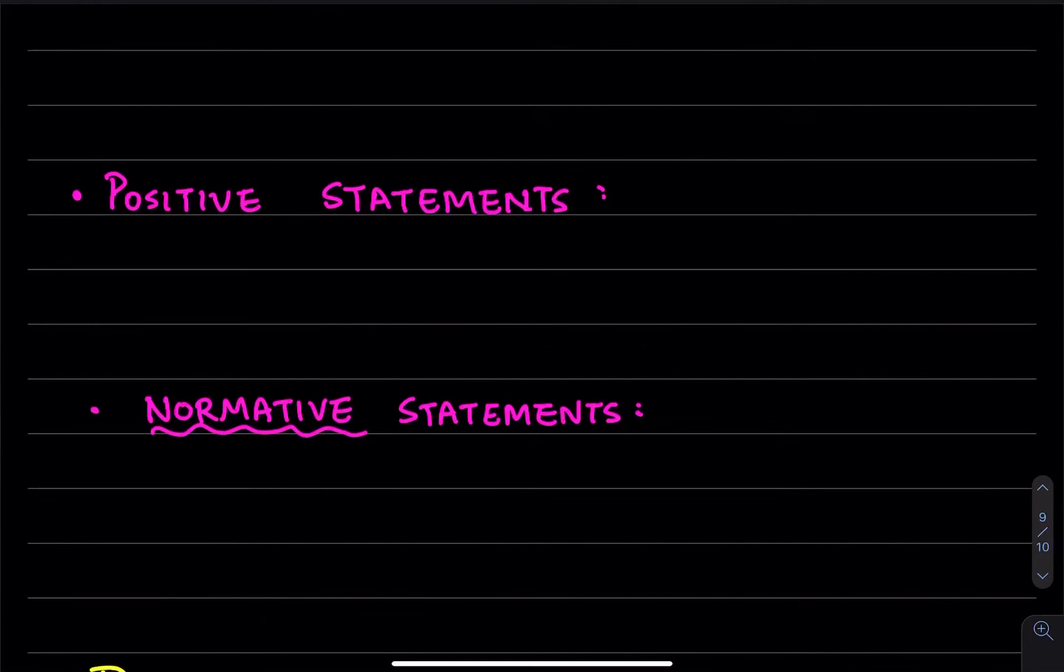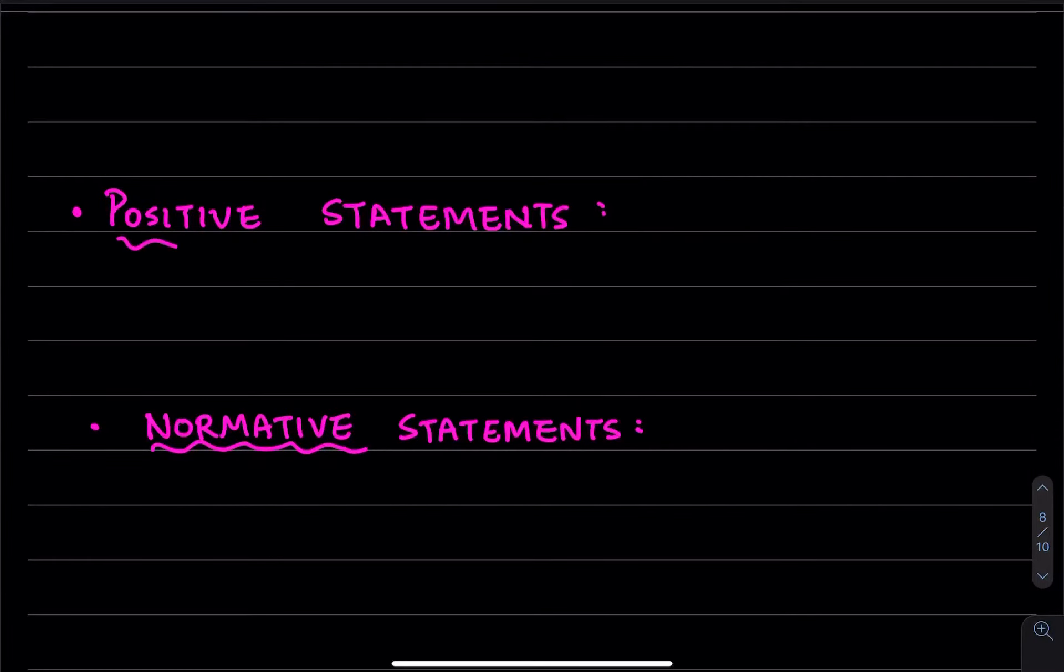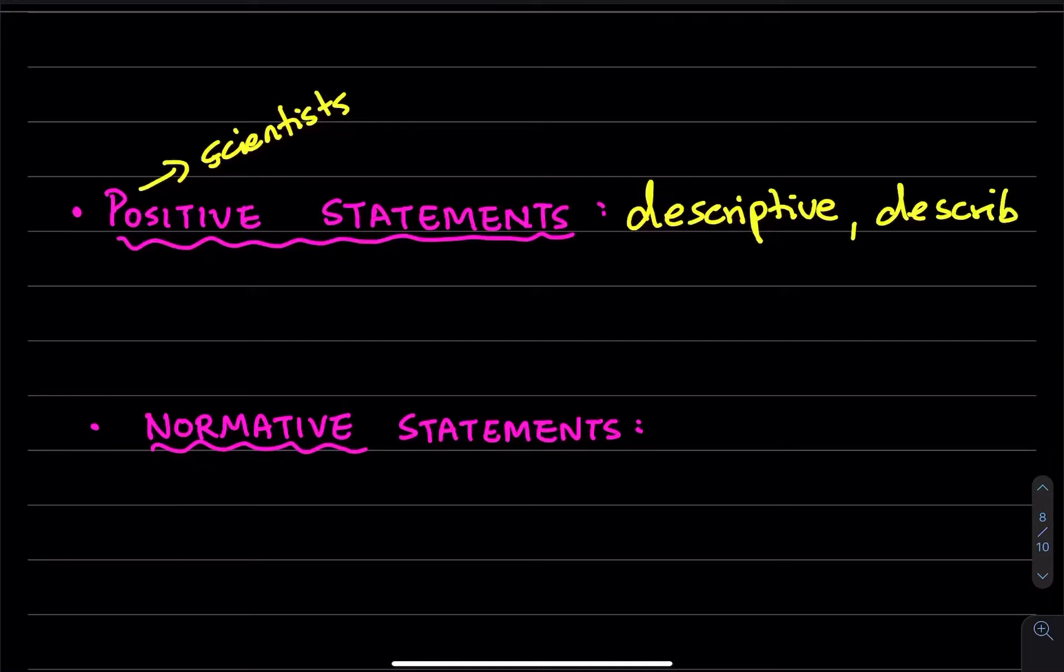Now let's turn to the two types of statements that we encounter a lot when we think about economists playing roles as scientists versus policy advisors. When economists are talking like scientists, they are trying to explain the world. They are trying to be descriptive about the world, or they describe the world as it is. But when they do so, we can always go back and test whether these statements were true or not.